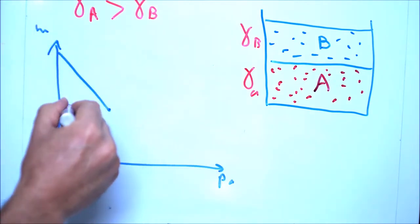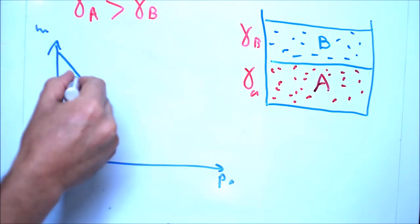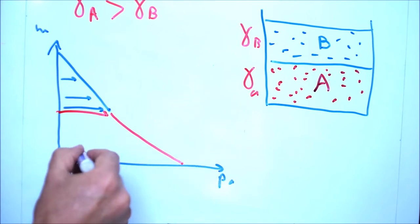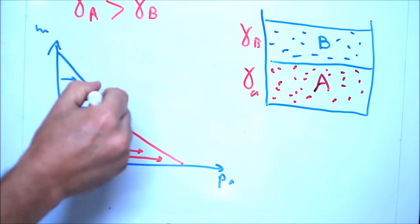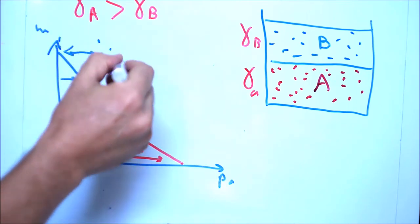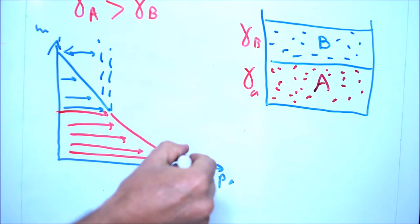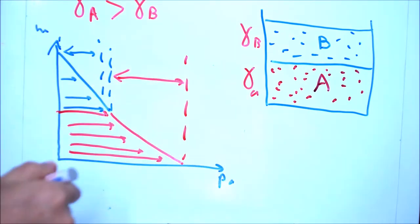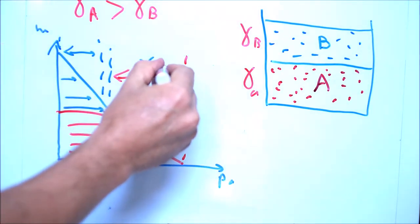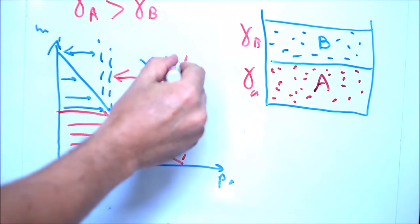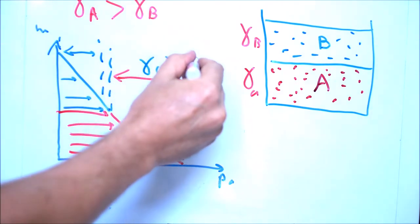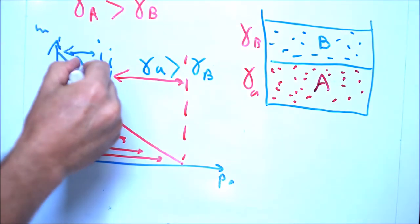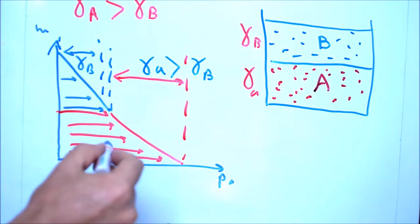The fourth assumption: graduation in fluid B followed by a different slope in fluid A, where the increment in pressure in fluid B is smaller than in fluid A. This means gamma A is larger than gamma B, which is the correct case.